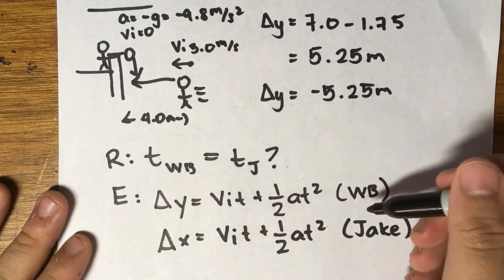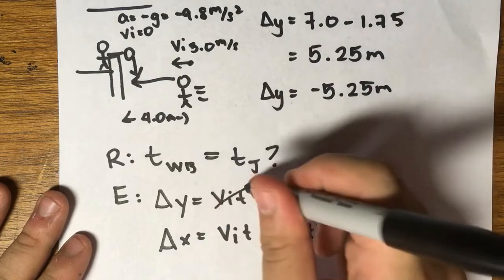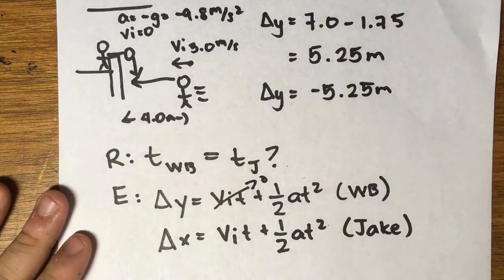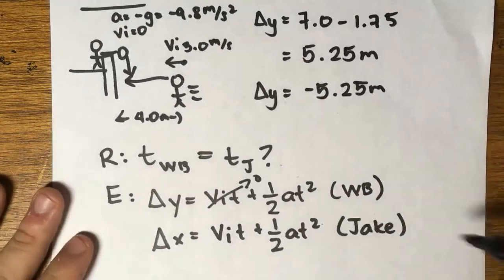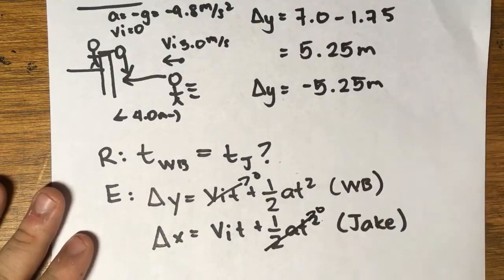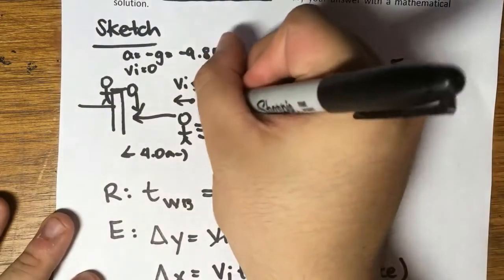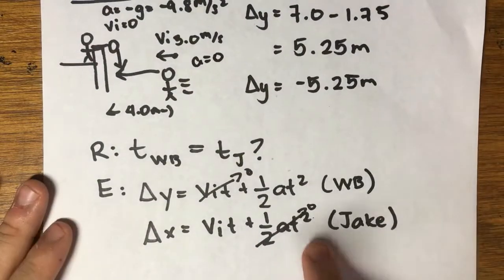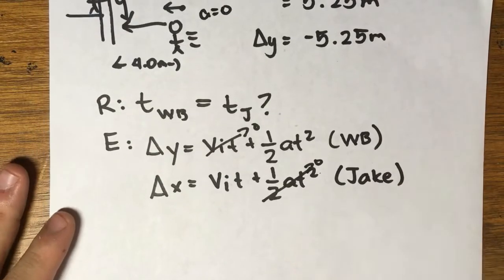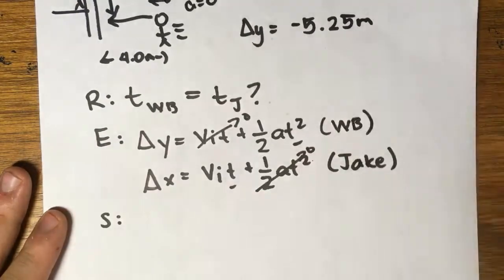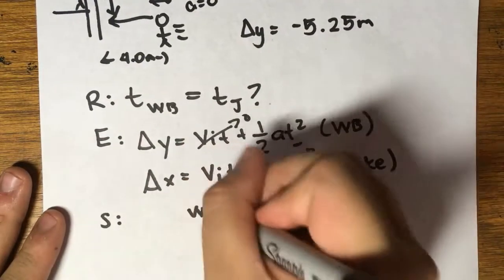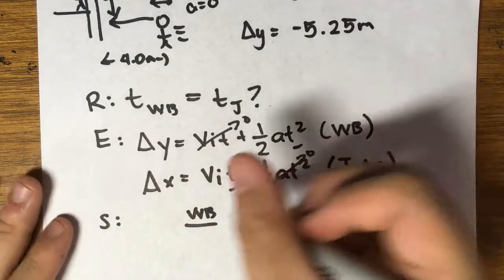What are the critical assumptions that we have to make? Well, for the water balloon we know that it starts from rest and therefore vi is equal to zero. That cancels out. For Jake, we know that he's jogging at a constant speed of 3 meters per second, so a is equal to zero, therefore this cancels out. So now we're going to solve for the time in both and see if they're equal.